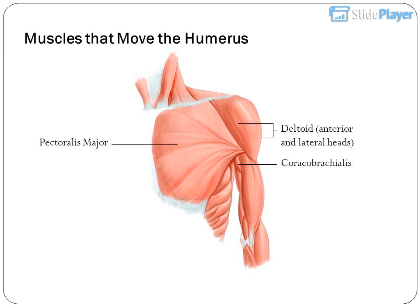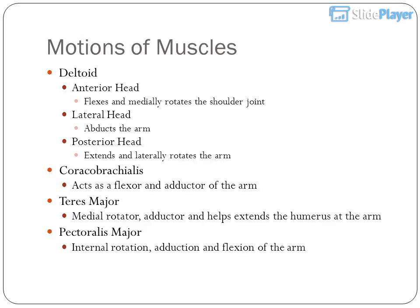Muscles that move the humerus: deltoid anterior and lateral heads, pectoralis major, coracobrachialis. Motions of muscles — deltoid, coracobrachialis, teres major. Anterior head flexes and medially rotates the shoulder joint. Lateral head abducts the arm.